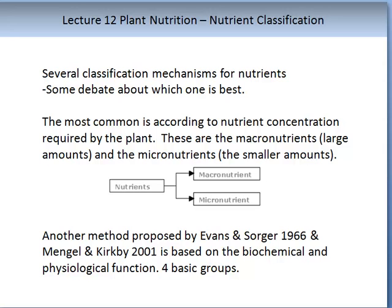A second method was proposed by Evans and Sauger in 1966 and then developed further by Mengel and Kirby in 2001. This is based on the biochemical and physiological functions, and these are separated into four groups.